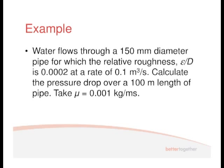It says water flows through a 150 millimeter diameter pipe for which the relative roughness, epsilon upon d, is 0.0002, at a rate of 0.1 meters cubed per second. Calculate the pressure drop over 100 meters length of pipe.